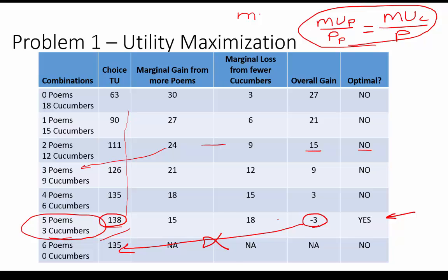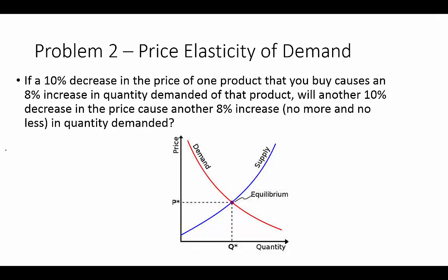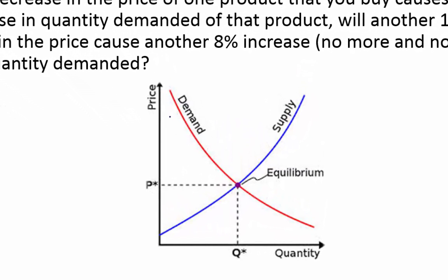Now let's look at problem two. It says: if a 10% decrease in the price of a product causes an 8% increase in quantity demanded, will another 10% decrease in price cause another 8% increase — no more, no less — in quantity demanded? The answer is no, and it's very highly unlikely. Here's the reason.